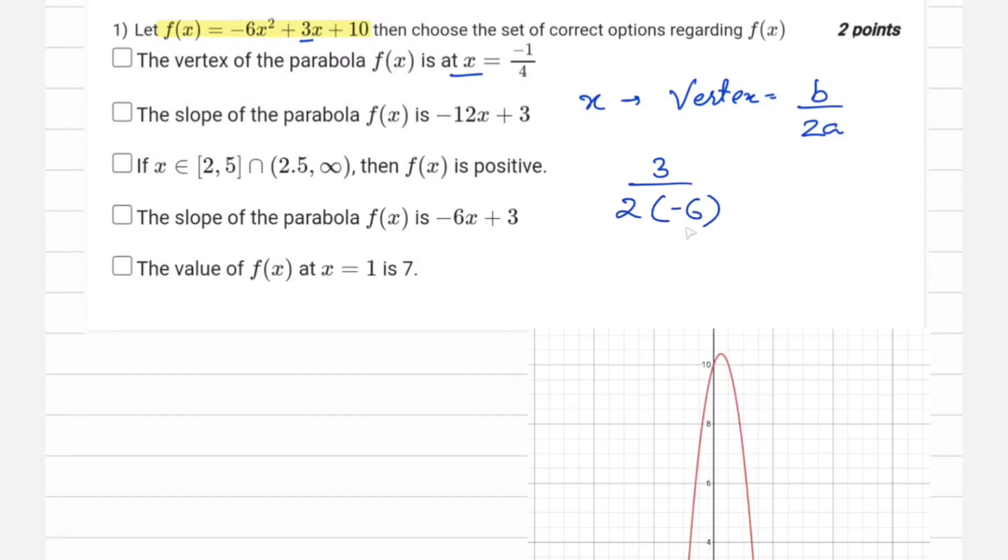Which gives that our first option is correct. Moving to the second option, the slope of parabola f(x) is minus 12x plus 3. In that case, we are going to differentiate it.